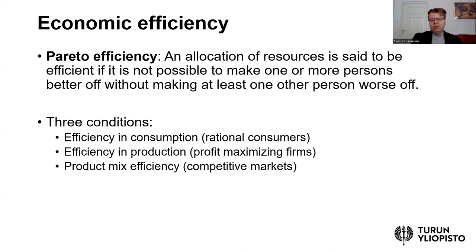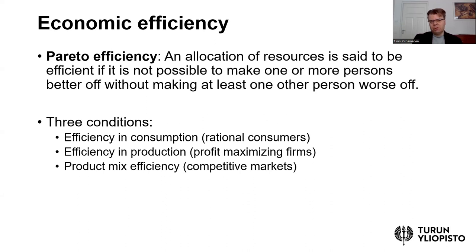The third condition is referred to as product mix efficiency, so that the coordination between producers and consumers is also efficient, meaning resources are allocated to the right kind of production. The economy is producing the right things — what consumers need and want. We can think about competitive markets as an efficient way of organizing this information between consumers and producers, ensuring that firms produce the commodities that consumers want to consume.